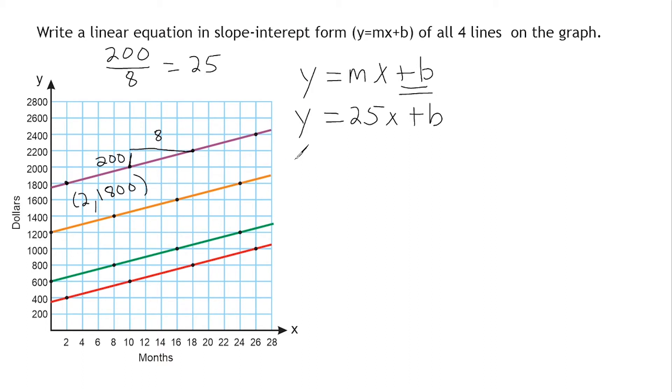So we swap out y with 1,800 and set it equal to 25 times whatever the x is. In this case, this point here is at 2. And now we can solve for b.